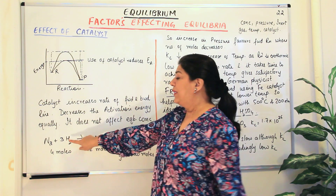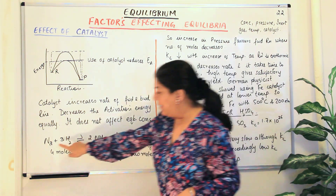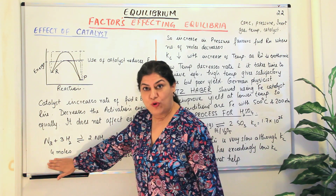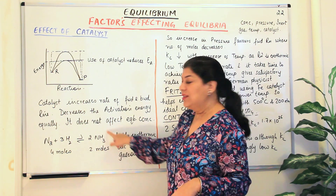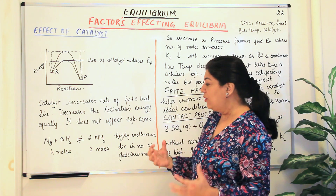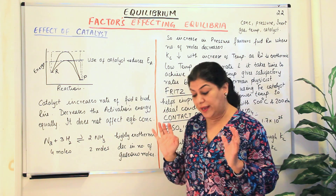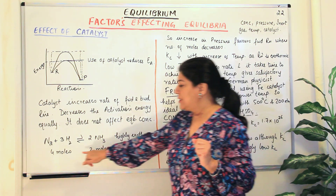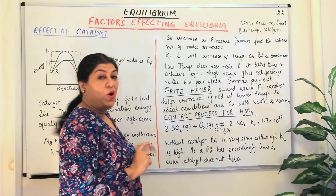Let us take the example of ammonia being formed from nitrogen and hydrogen. This is a highly exothermic reaction: N2 + 3H2 gives 2NH3. It is a reversible reaction. In the reactants you have 4 moles — 1 mole of nitrogen and 3 moles of hydrogen. In the products you have 2 moles of ammonia. All of them are gaseous. This is a highly exothermic reaction, meaning energy is given out, and we notice that there is a decrease in the number of moles.